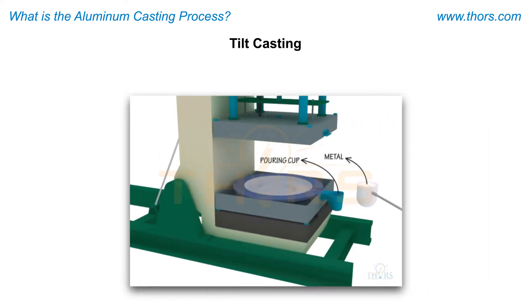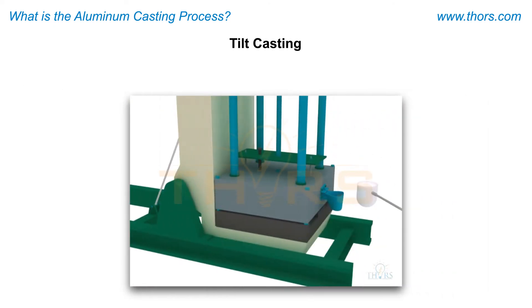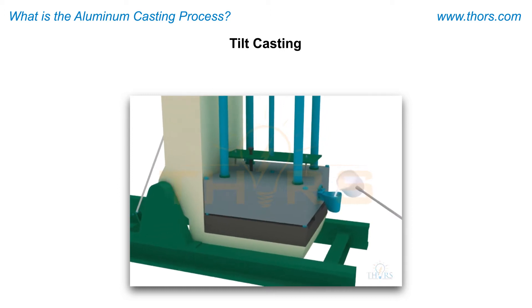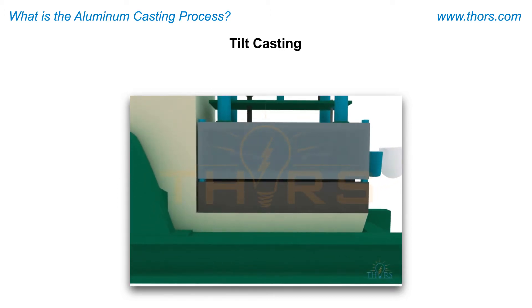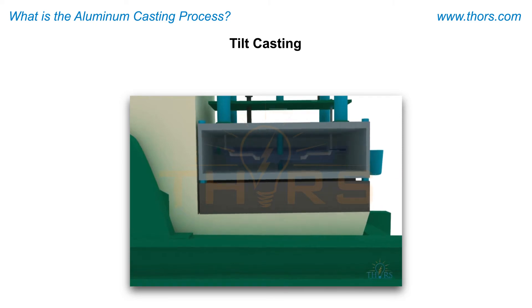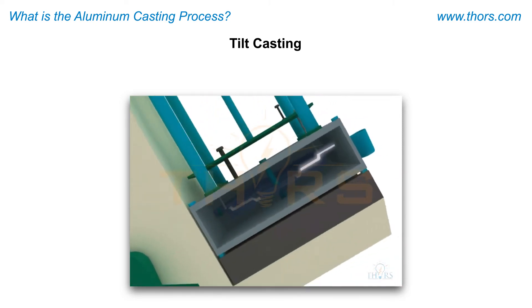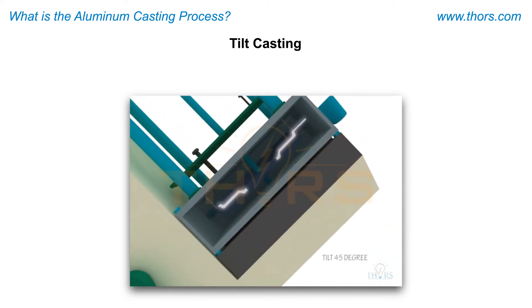The tilt casting process is also generally carried out in permanent molds. After the liquid alloy is poured into a cup or basin at the entrance to the filling system, the mold is tilted so that the metal flows into the running system.